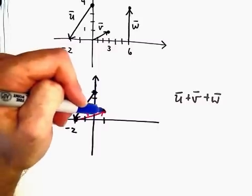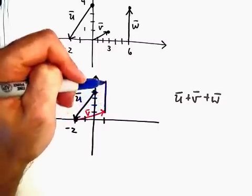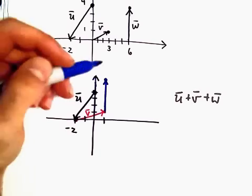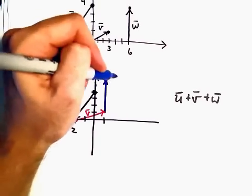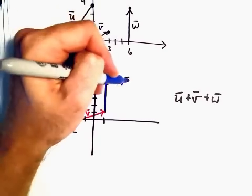if we go up 4 units, we're now going to be sitting, this would now be at the point (1, 5).